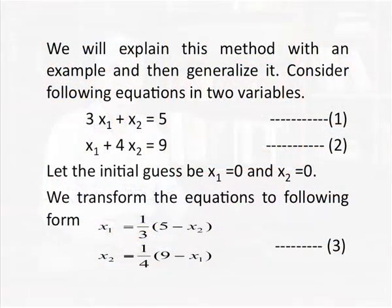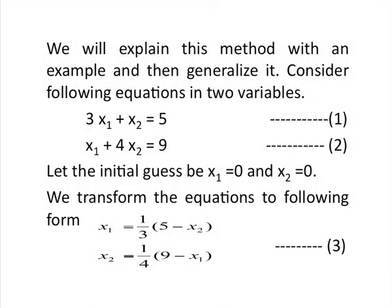We will use equations one by one and transfer the remaining parts. We will keep the diagonal element on the left-hand side and transfer all other elements of the equation to the right-hand side. Then we will divide the whole equation by the diagonal coefficient, and that will give us the expression for the variable on the left-hand side. On the right-hand side, we will have the multiplication of coefficients and variables, with a summation of all these divided by the diagonal element. We will explain this method through an example and then generalize it.